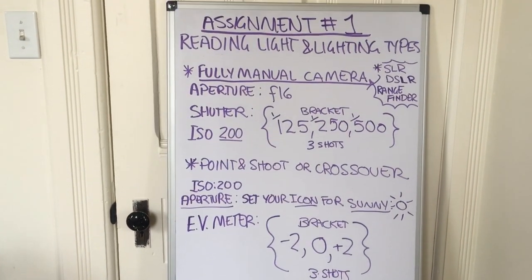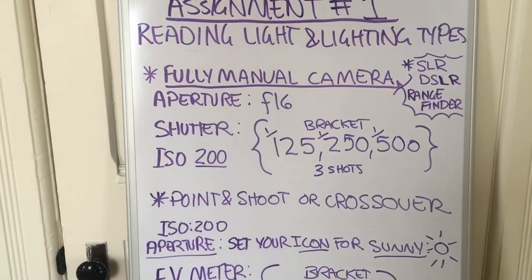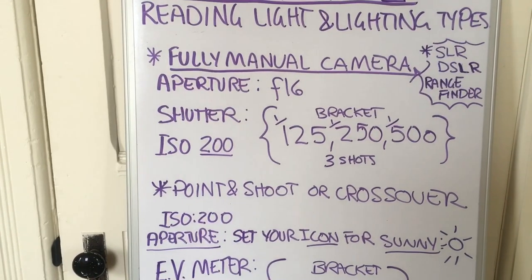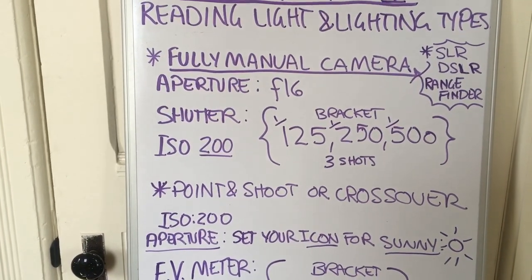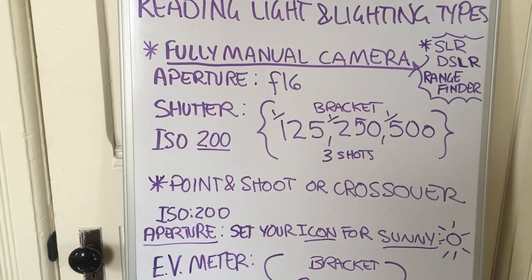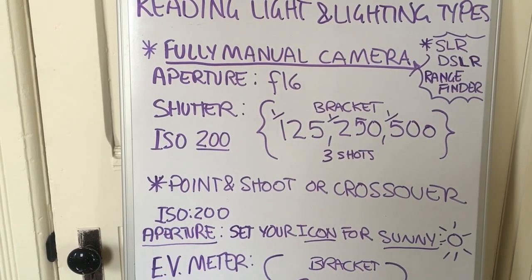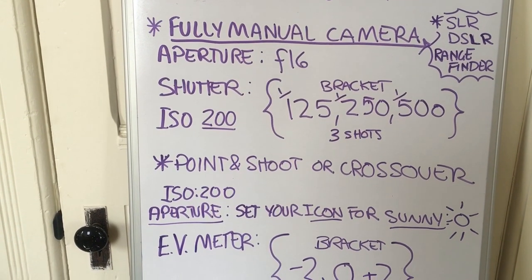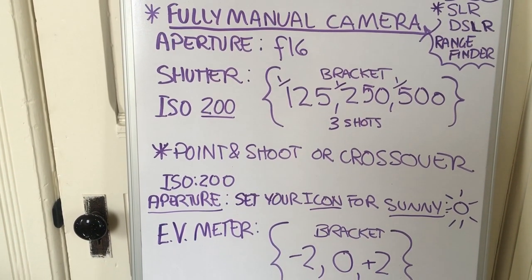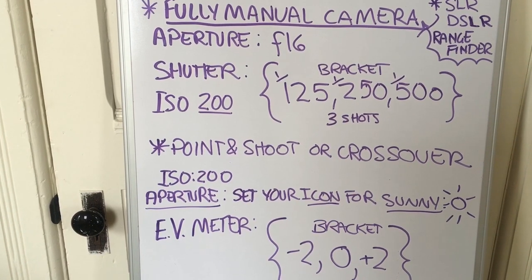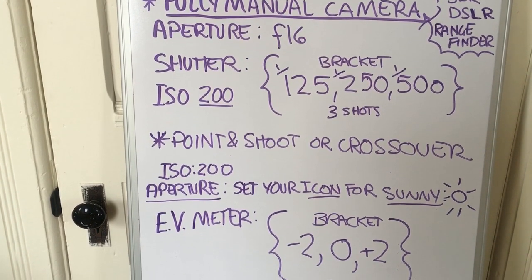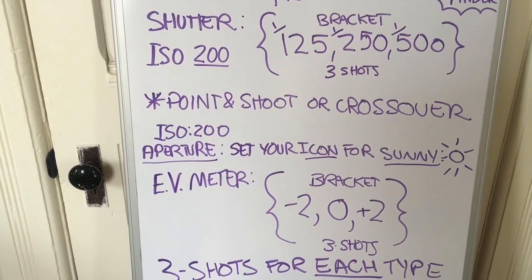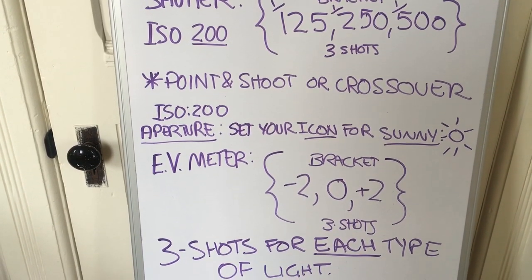Here on the board we have assignment number one: reading light and lighting types. A fully manual camera — like the SLR, DSLR, or sometimes a rangefinder — you set your aperture at f16 and use the shutter bracket of three shots for each type of light. For a point-and-shoot or crossover camera, you're going to use your EV meter, and I'll show you that in just a few minutes.